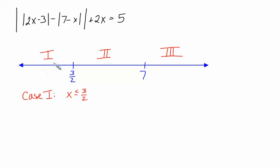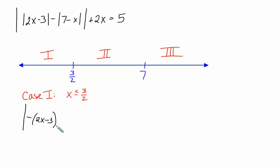An easy number to think about in this region is x equals zero. The outermost absolute value symbols must remain — we're not able to take those off quite yet. But if x is zero, this first absolute value is negative inside. So to remove the absolute value symbols, we have to make it positive by putting a negative sign out front. Inside 7 minus x, if x is zero, that's positive, so we just take off those absolute value signs, turn them into parentheses.